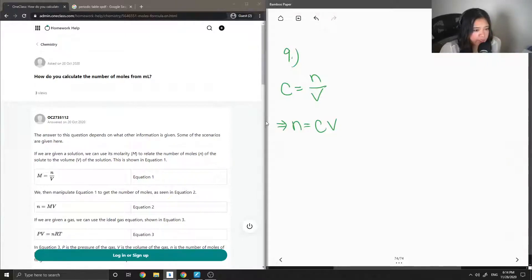Another way to do that - so this is for solutions. If we had an ideal gas and it wasn't a liquid, we can also use the ideal gas formula which is PV equals NRT. So P is pressure, V is volume, n is number of moles, R is the gas constant, and T is temperature.